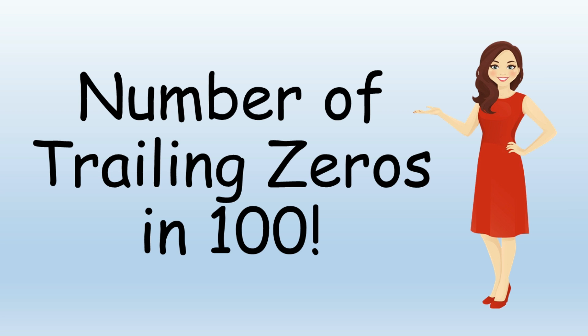The answer to this problem is 24, that is, there are 24 zeros trailing in 100 factorial.